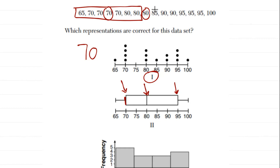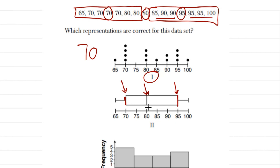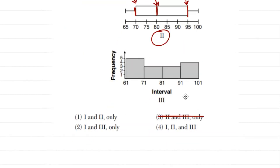For the third quartile, we do the same thing with the upper half — find the median of those values. The middle number there is 95, so the third quartile is 95 and that's the right end of the box. Our overall median is the number right in the middle of all 15 values, which is 80. If you had an even number of data points, you'd average the two middle values. So numeral two is a correct representation.